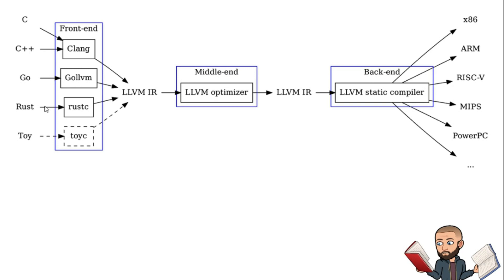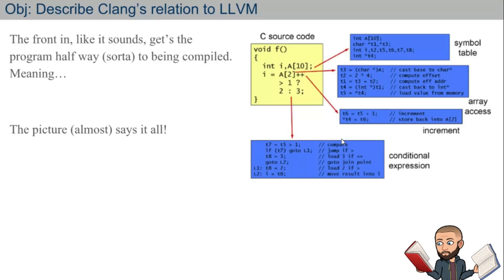Even languages like Go and Rust can apparently be used with Clang. Once you have your program written in one of these languages, it goes through this intermediate representation phase. LLVM will optimize it, whichever assembly language you need to compile to will be done, and after that it's the ones and zeros.